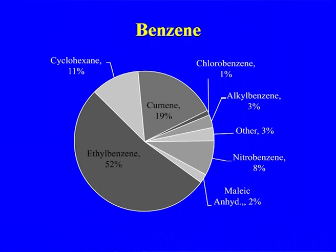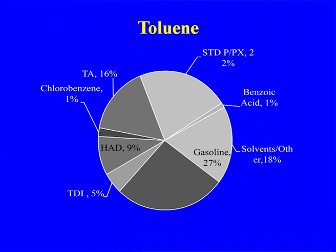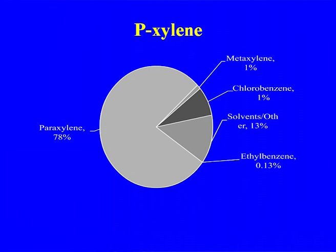A major portion of benzene goes to ethyl benzene and then to styrene, as well as to cumene, nitrobenzene, and anilines. Para-xylene: the maximum portion goes for the manufacture of polyester — that is, terephthalic acid. The earlier route for polyester was DMT (dimethyl terephthalate), but now purified terephthalic acid (PTA) is the monomer for the polyester industry.